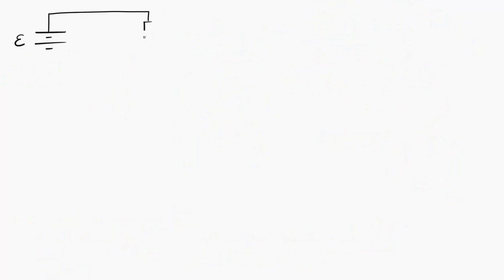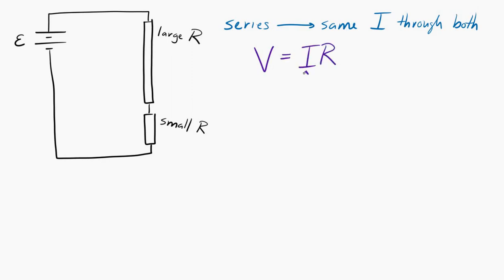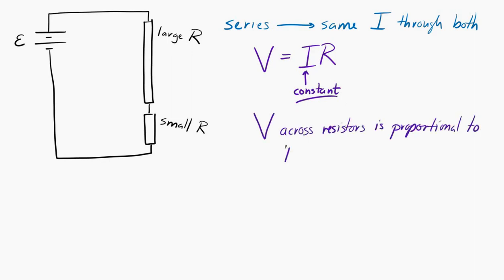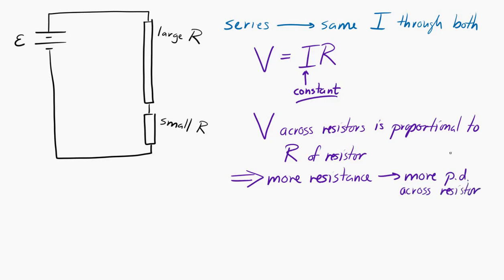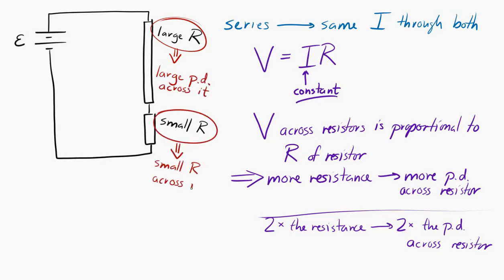Let's look at another example. Let's say I have a battery connected to a large resistor and then a small resistor. We still have the same current through both because it's a series circuit. The V equals IR equation tells us that the potential difference across a resistor is proportional to its resistance. So the resistor with more resistance will have more potential difference across it — if one has twice the resistance, it will have twice the potential difference.